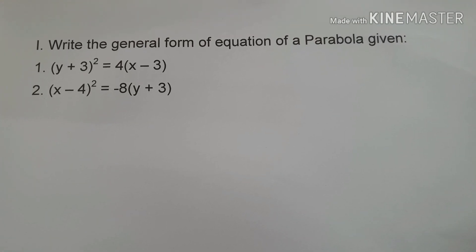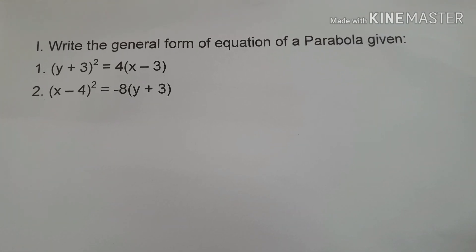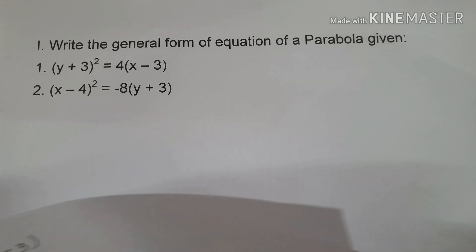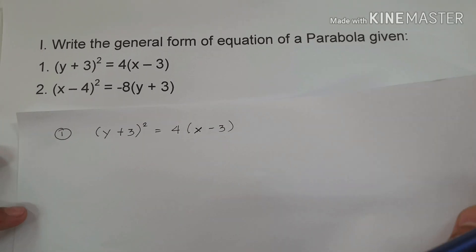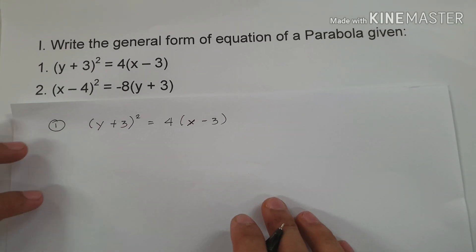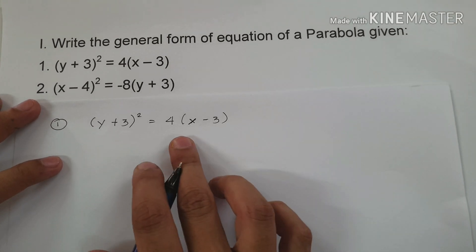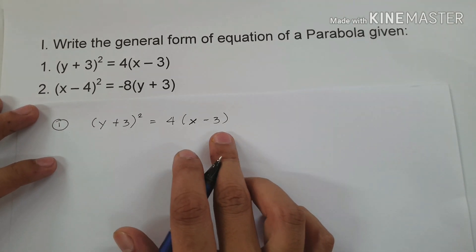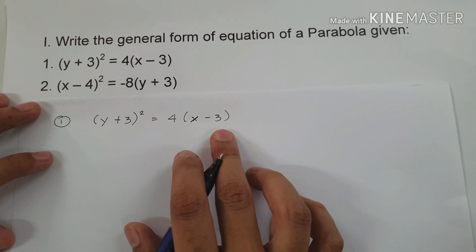In this video, we are going to write the general form of equation of a parabola given its equation. For example, number 1, we have (y + 3)² = 4(x - 3).